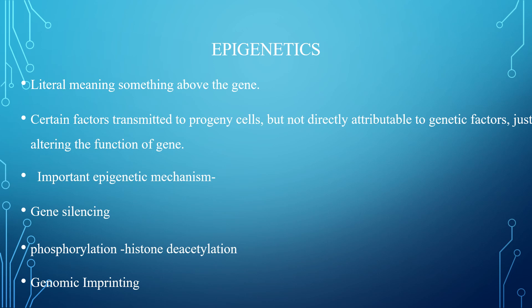Epigenetics: the literal meaning of epigenetic is something above the gene. Certain factors are transmitted to the progeny cell but not directly attributable to genetic factors, just altering the function of the gene. Important epigenetic mechanisms include gene silencing in which there is DNA methylation. For example, in Fragile X syndrome, there is DNA methylation that leads to inactivation of the X chromosome. There is also phosphorylation, histone deacetylation, and genomic imprinting. Examples of genomic imprinting are Prader-Willi syndrome and Angelman syndrome, where there are changes in chromosome 15.